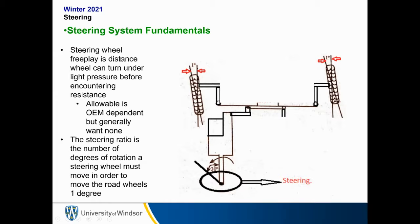What is the idea behind a steering system? The first fundamental is steering wheel free play — the distance the wheel can turn under light pressure before encountering resistance. Ideally you don't want any free play. If you look at Volkswagen Beetles from the 1960s, at highway speeds you could turn the steering wheel almost a half rotation and the vehicle would not turn. That is terrible free play — generally you don't want any of it.